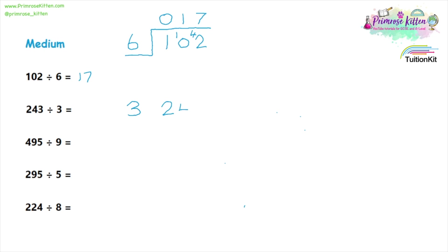243 divided by three. We put the three on the outside. There are no threes that can go into two, so we have to carry that two over. Now we ask: how many threes go into 24? That is eight threes exactly — and because it's exact, there is nothing to carry over. Then: how many threes will go into three? And that is one.